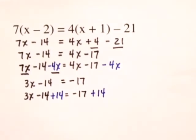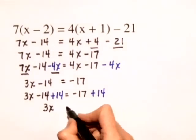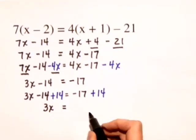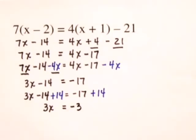On the left hand side we'll just have 3x. The minus 14 plus 14 adds to 0 equals, on the right hand side negative 17 plus 14 is negative 3.